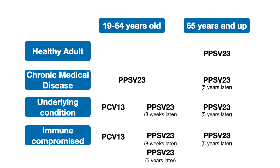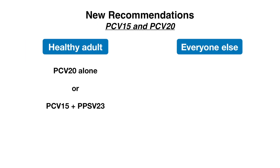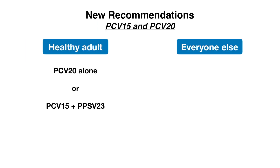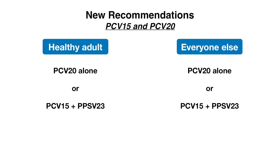In any healthy adult, the new recommendation is that they can receive PCV20 alone, or PCV15 followed by the Pneumovax vaccination, with these two given at least one year apart. What's really nice is that for everyone else — regardless of whether they're immunocompromised or have chronic medical or other underlying conditions — the vaccination recommendations are the exact same. The only difference is that truly immunocompromised patients can receive the two-vaccine series a little sooner than one year apart.